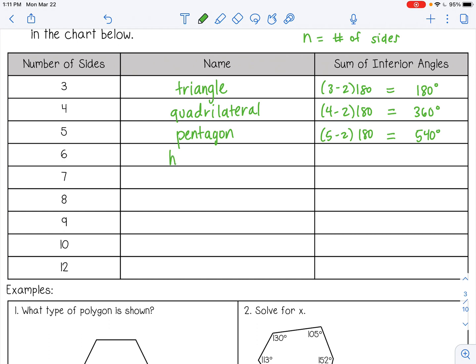Alright, a six-sided polygon is a hexagon. That would be 720. A seven-sided polygon is a heptagon. 900. An eight-sided polygon is an octagon. 1,080.